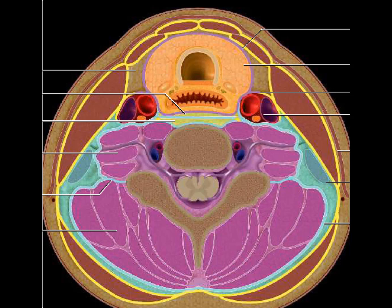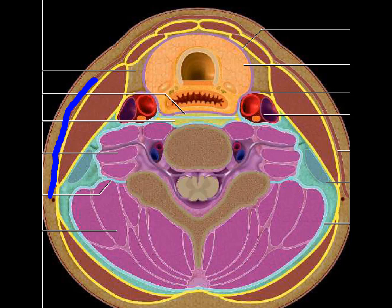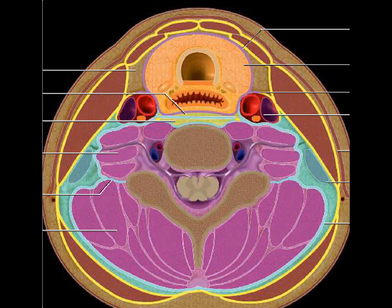The deep cervical fascia has three components: the superficial component, the middle component, and the deeper component. Looking at this image, the outermost layer is the skin, deeper to that is the subcutaneous fat, and deeper still is one thin muscle — the platysma — which lies between the subcutaneous fat and the deep cervical fascia.